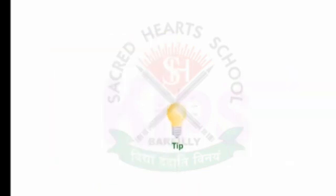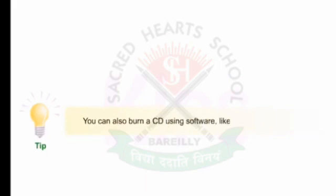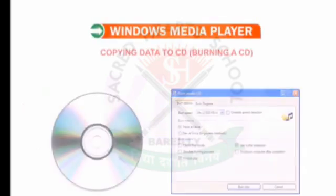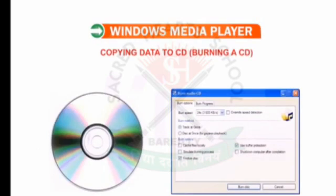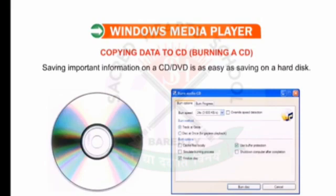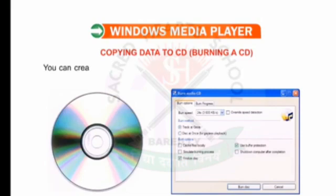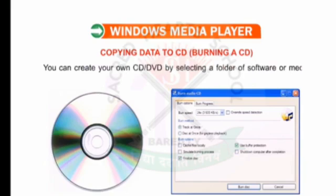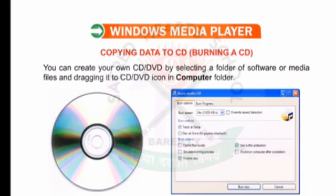Now let me give you a tip — you can also burn a CD using software like Miro, ExpressBurn, etc. Now let us learn how to copy data to a CD, that is, burning a CD. Saving important information on a CD or DVD is as easy as saving on a hard disk. You can create your own CD or DVD by selecting a folder of software or media files and dragging it to the CD or DVD icon in the Computer folder.